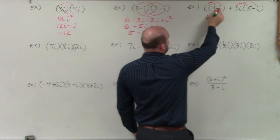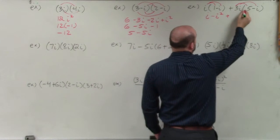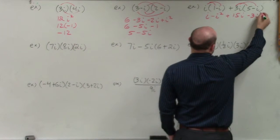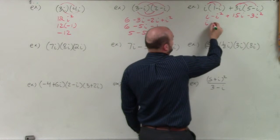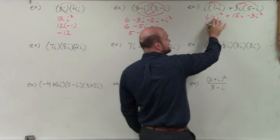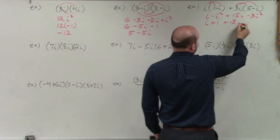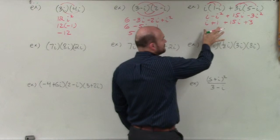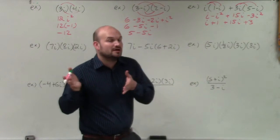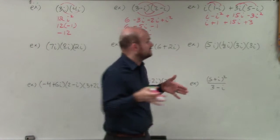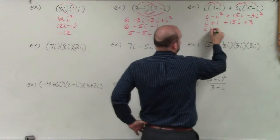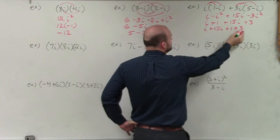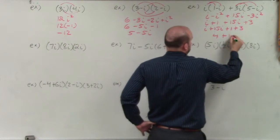i times 1 is i. i times negative i is negative i squared. Plus 3i times 5 is 15i, and 3i times i is negative 3i squared. Now we replace our i squareds with negative 1. So that's i plus 1 — because negative times negative 1 is plus 1 — plus 15i, and then i squared again is negative 1, so negative 1 times negative 3 is a positive 3. I can rearrange so my real terms are together and my complex terms are together, giving me 4 plus 16i.